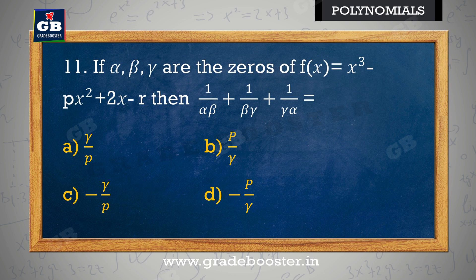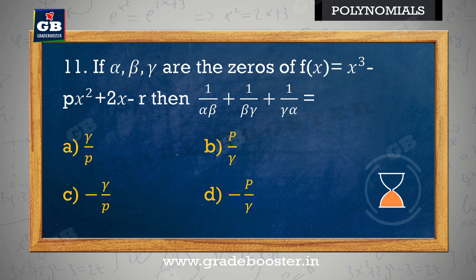If alpha, beta, gamma are the zeros of f(x) = x³ − px² + 2x − r, then 1/(alpha·beta) + 1/(beta·gamma) + 1/(gamma·alpha) is equal to: yadi alpha, beta, gamma, f(x) = x³ − px² + 2x − r ke zeros hain — a) gamma/p, b) p/gamma, c) −gamma/p, d) −p/gamma.